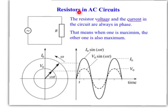Resistors in AC circuits, like this, the resistor voltage and current in a circuit are always in phase. That means when one is maximum, the other one is also maximum.